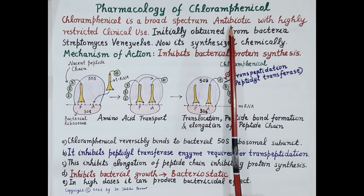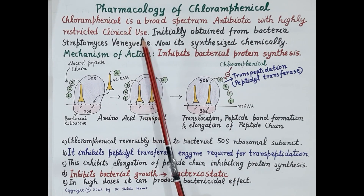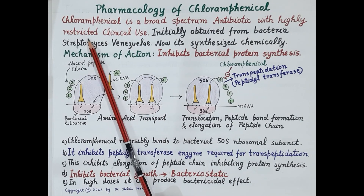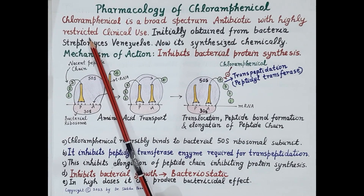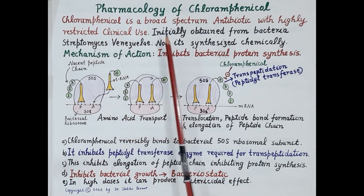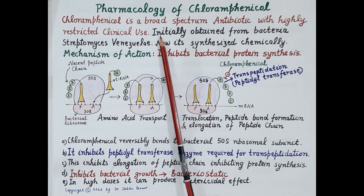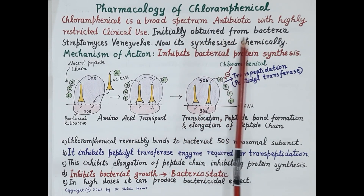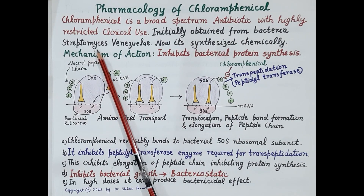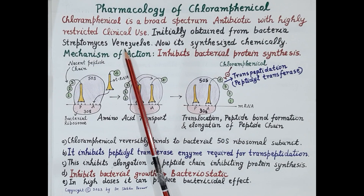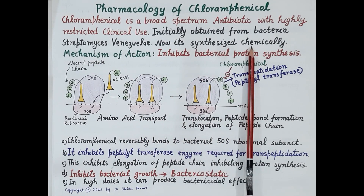Even though chloramphenicol is a broad-spectrum antibiotic, its clinical use is highly restricted due to its toxicity. It can cause bone marrow depression, leading to serious adverse effects like aplastic anemia, agranulocytosis, and thrombocytopenia. Initially in 1947, chloramphenicol was obtained from the bacteria Streptomyces venezuelae, but now it is synthesized chemically and the commercially available product is synthetic.